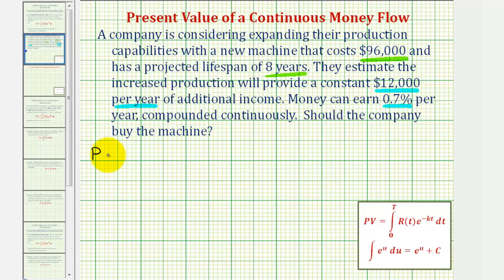So the present value of the cash flow is equal to the integral of r(t), which is the annual cash flow of $12,000, times e raised to the power of negative kt, where k would be the continuous interest rate expressed as a decimal. So we'd have negative 0.007t dt. And because the lifespan is eight years, we'll integrate from zero to eight.